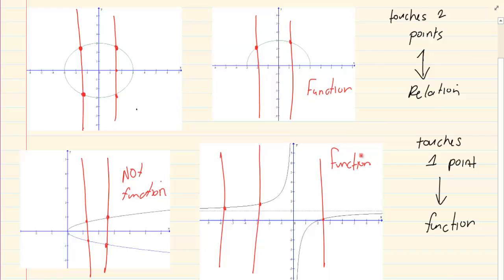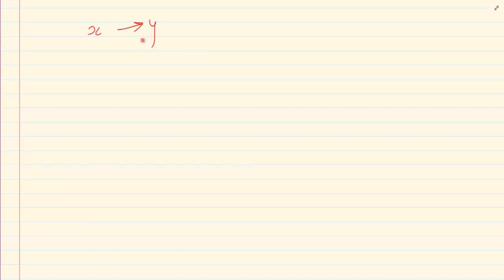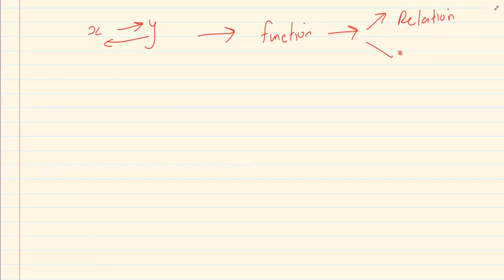What happens when we have a function? Why would functions be so important? What we do in grade 12 is inverse functions. Inverse functions means x becomes y and y becomes x. But once we do this to a function, the function changes — and then it can either become a relation or it can remain a function.